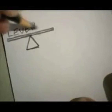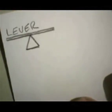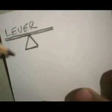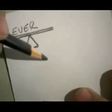Another simple machine that's going to be very simple for us. Let's go ahead and label that one lever. Okay, because it's a lever. Now, next, the next one is an inclined plane.